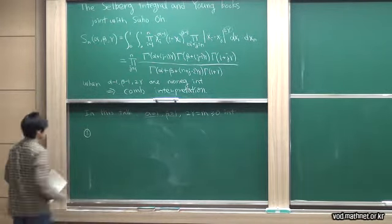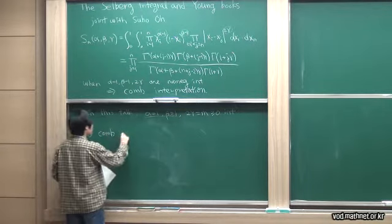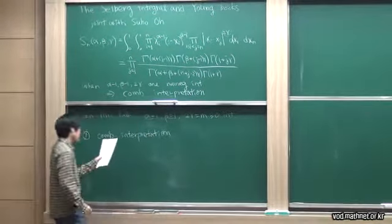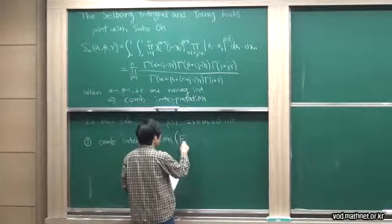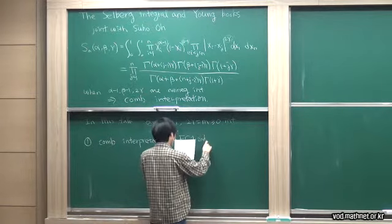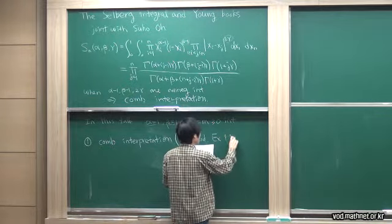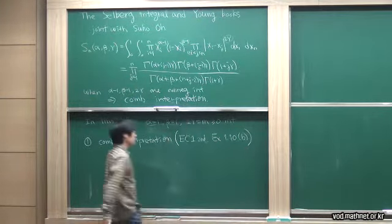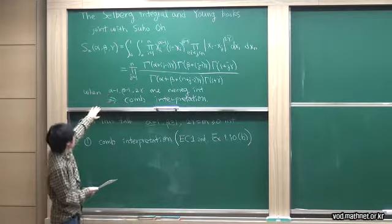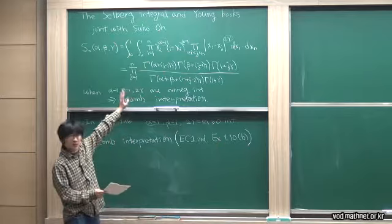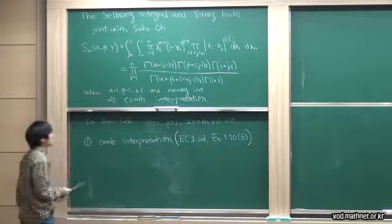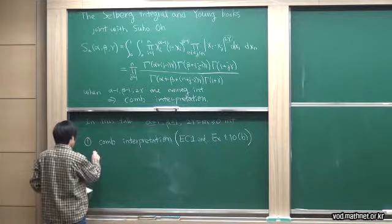The first part is a combinatorial interpretation due to Richard Stanley. It can be found in his book 'Enumerative Combinatorics, Volume 1, second edition,' exercise 1.10(b). I'm going to review this combinatorial interpretation. With alpha equals 1 and beta equals 1, we can forget those two factors. Looking at the third factor, we see it is actually a power of the Vandermonde determinant.